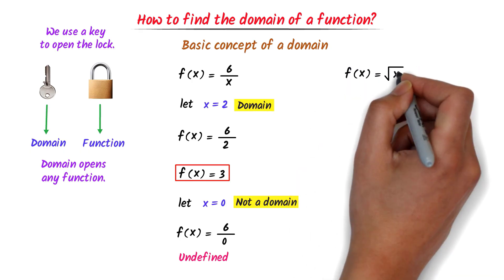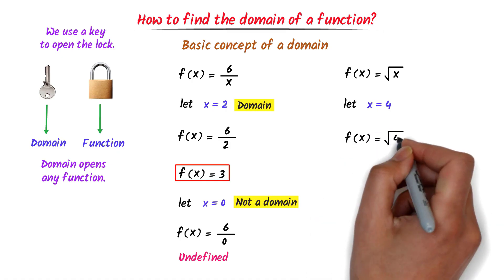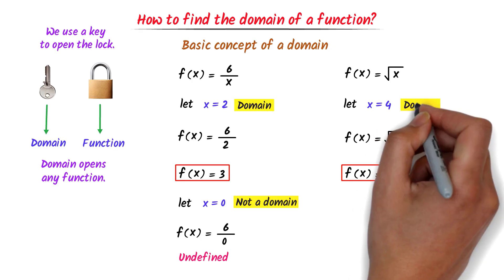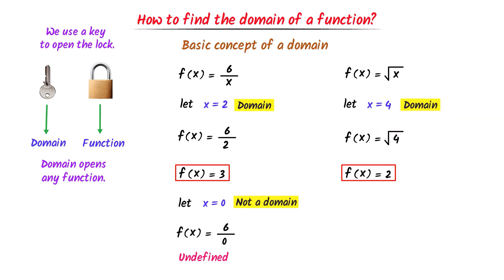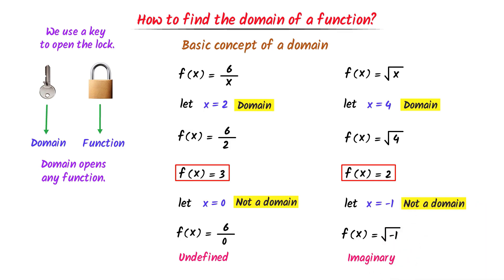Now consider this square root function. I take the value of x equal to 4. After calculation, I get 2. Hence, 4 is the domain of this function. Secondly, let x equal negative 1. After calculation, I get square root of minus 1, or iota i, which is an imaginary number. Hence, minus 1 is not the domain of this function, because we get an imaginary number.